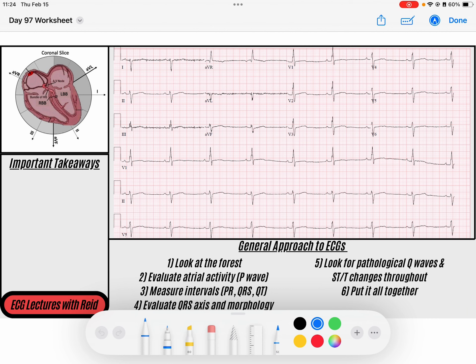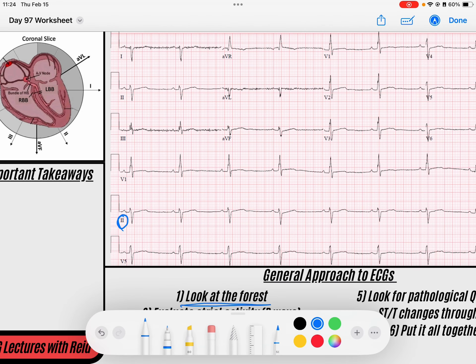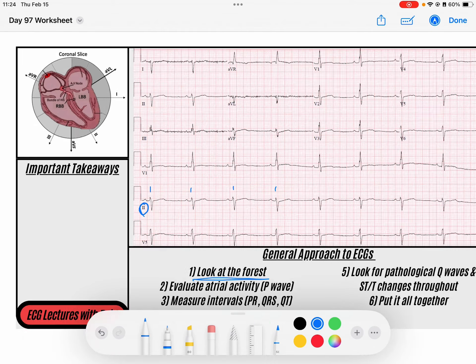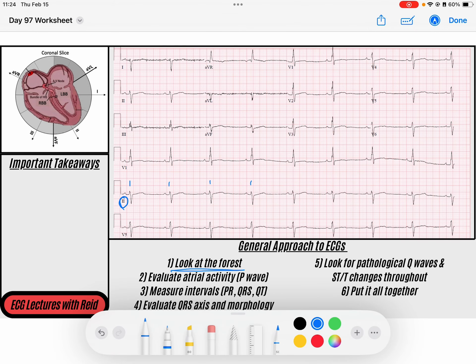Let's jump into this one. The first thing I like to do is look at the forest, get an idea of what's going on, and the trees of the forest are my QRS. Down here in lead 2, I've got what appears to be a narrow complex rhythm that is just beating along at a pretty regular rate and rhythm, and that continues throughout the entirety of the strip.